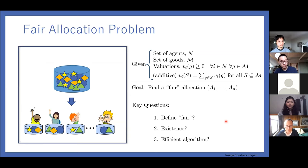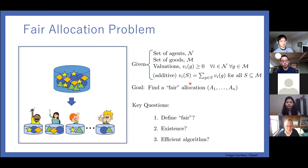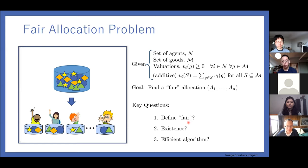Let's start with what is a fair allocation problem. We are given a set of agents N, a set of goods M, and valuations of each good for each agent. We assume the valuations are non-negative and additive, meaning the value for a bundle is equal to the sum of values of individual goods in that bundle. The goal is to find a fair allocation — an N-partition of the set M. Key questions are: what do we mean by fairness, does such a fair allocation always exist, and can we provide efficient algorithms to find it?